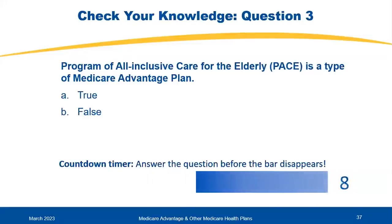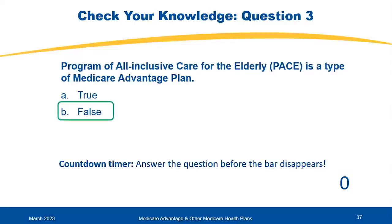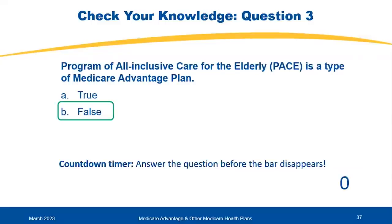Knowledge check: Is PACE a type of Medicare Advantage plan? That is false. PACE is not a Medicare Advantage plan, but it is part of Medicare. It's a joint Medicare and Medicaid program, available in states that have chosen it as an optional Medicaid benefit. PACE combines medical, social, and long-term care services for frail elderly people who live in and receive health care in the community, and provides all medically necessary services including prescription drugs.